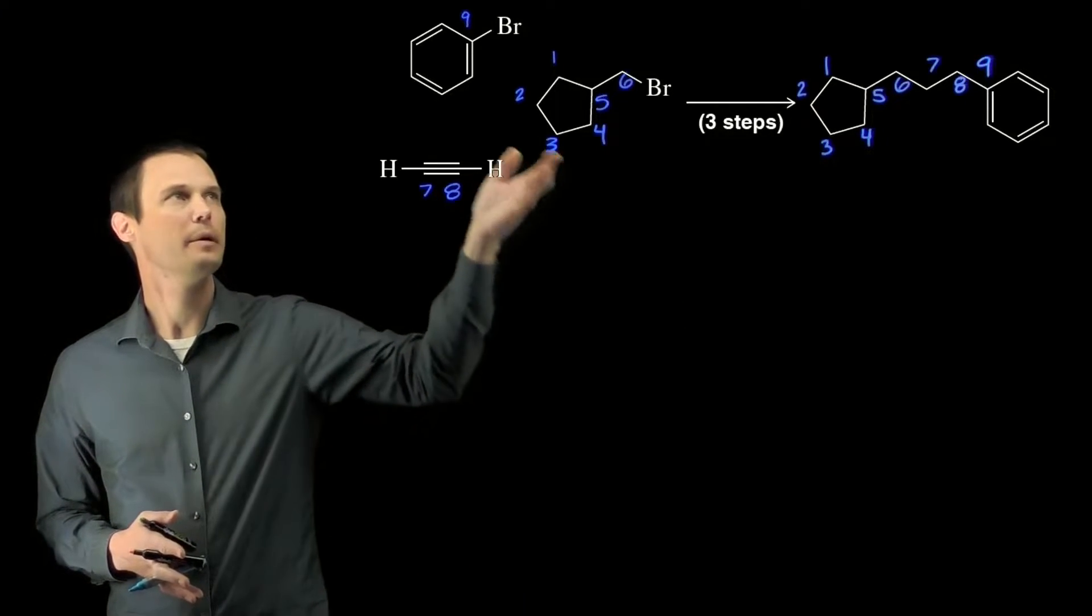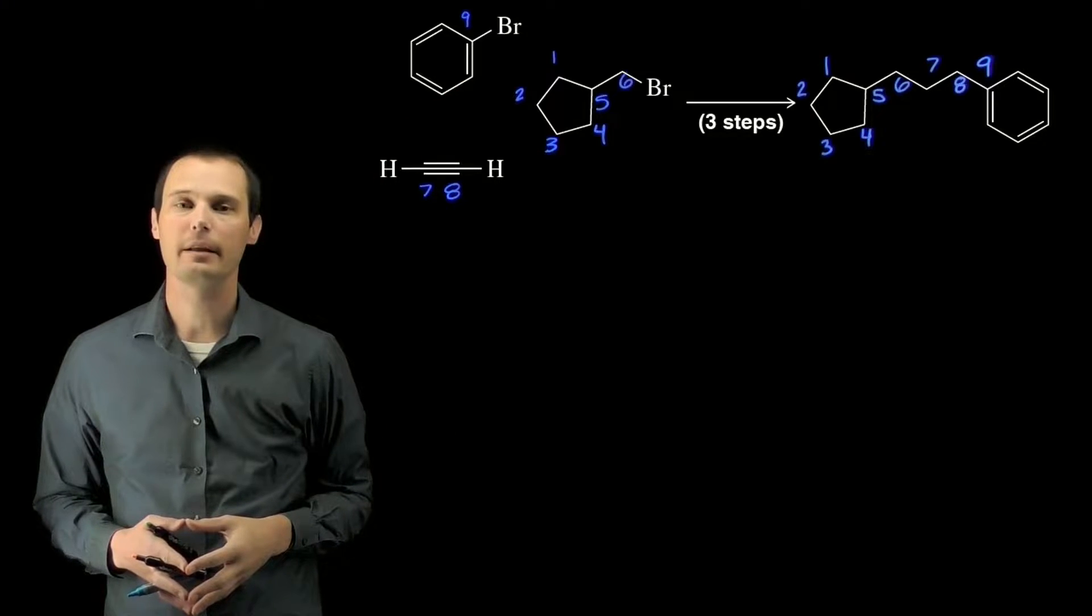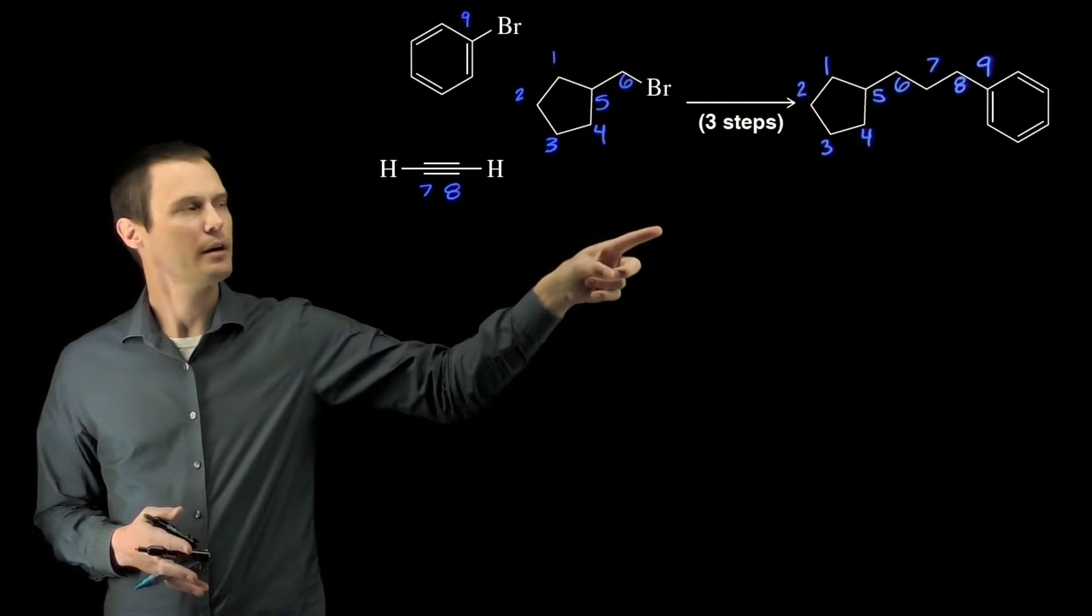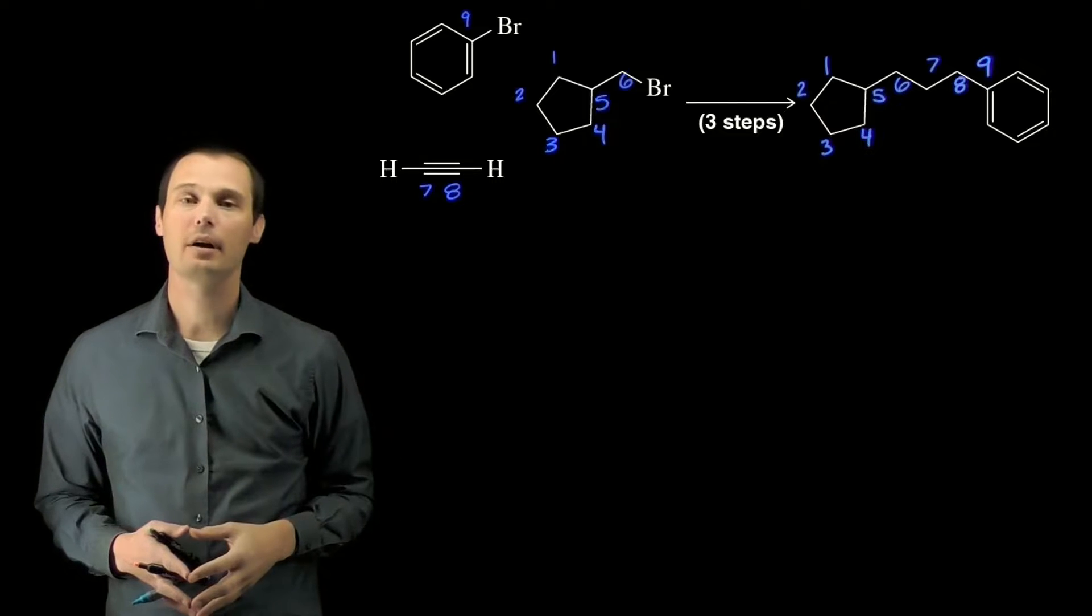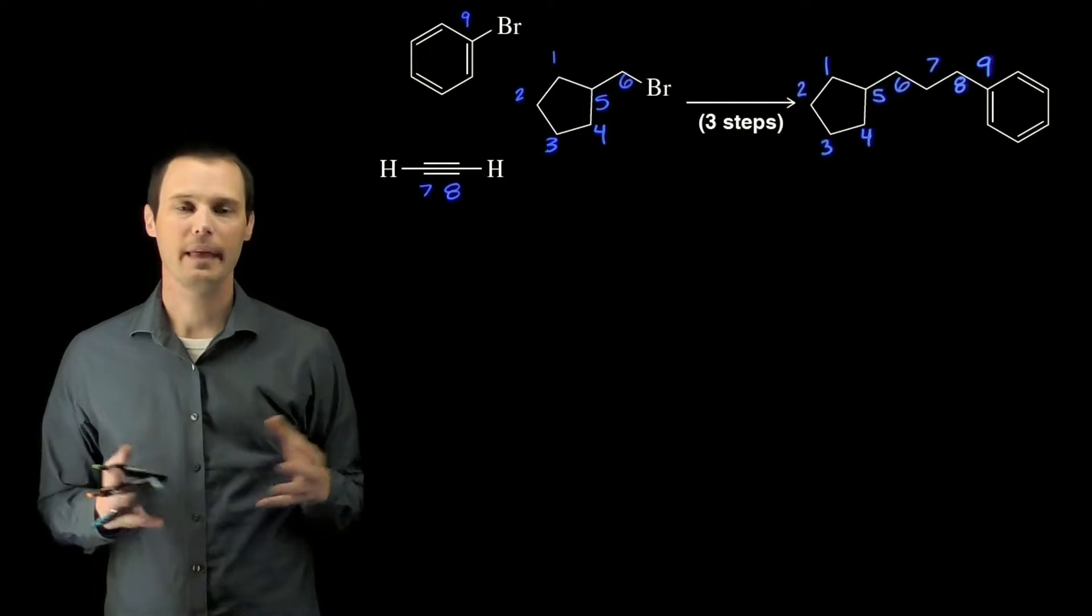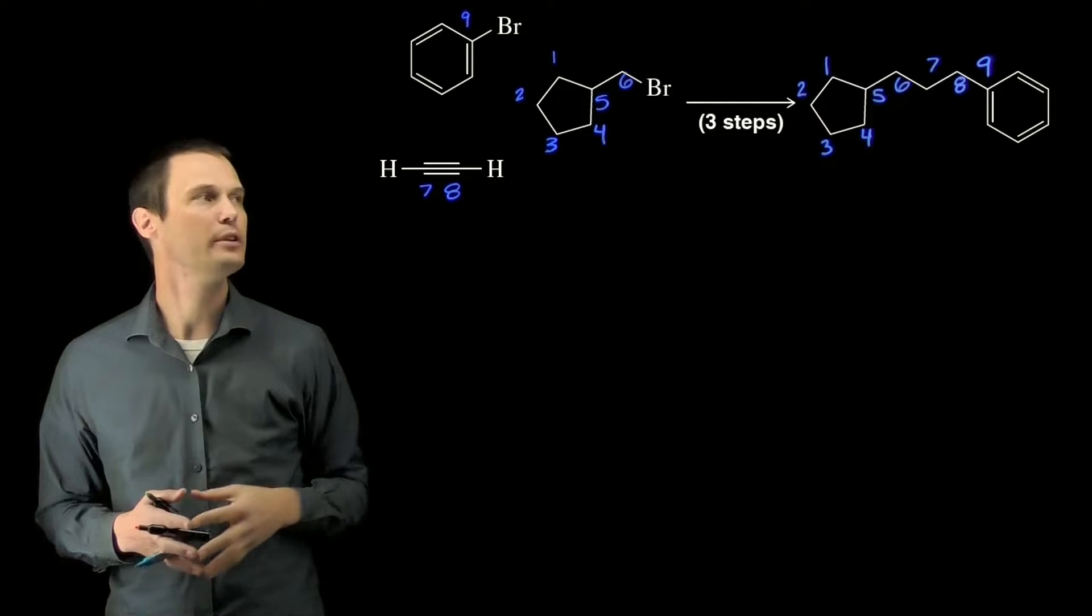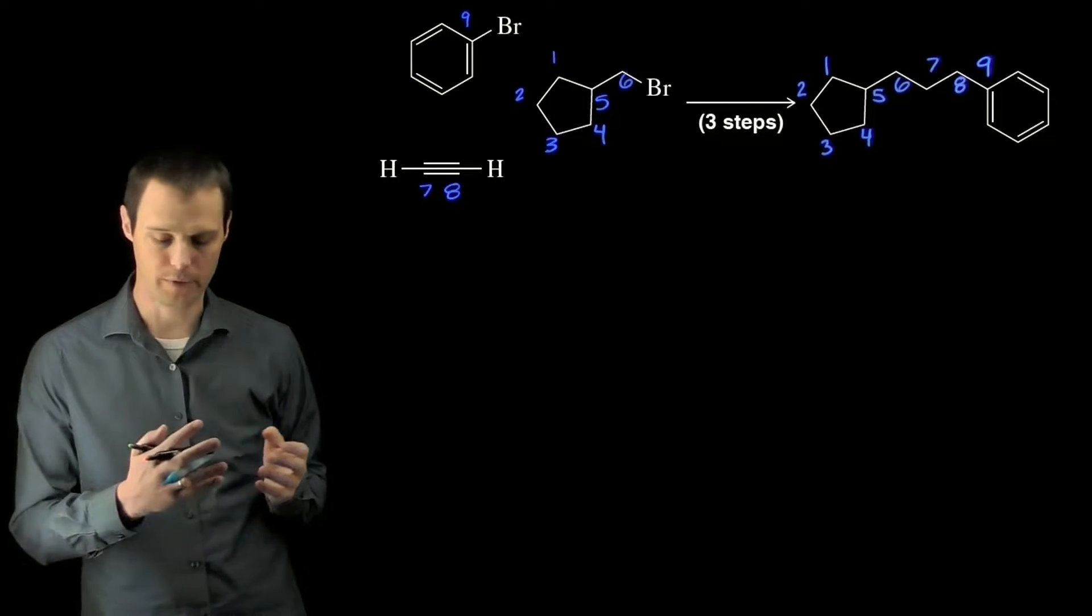Carbon number nine in the product is part of the benzene ring, so we can number carbon number nine in our starting material. And that must mean that carbon seven and eight in our product are the carbons in our alkyne starting material. That's good context for how to put this synthesis together to form this product.